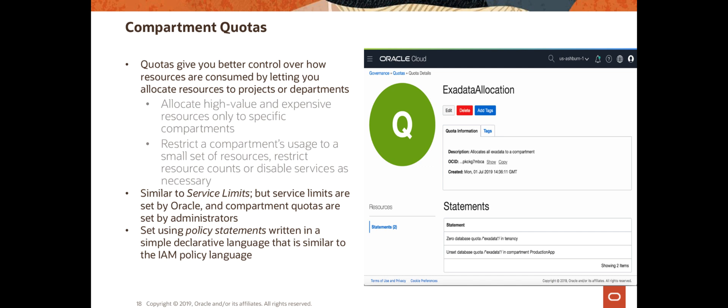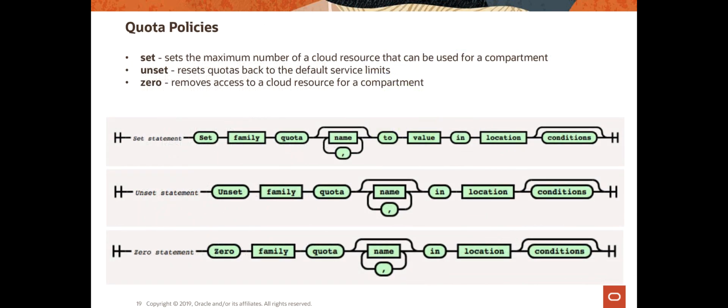In a sense, compartment quotas are similar to service limits that we just looked at. But the biggest difference is that service limits are set by Oracle, and compartment quotas are set by administrators in the tenancy. Compartment quotas are set using policies that allow you to allocate resources with a high level of flexibility. These policy statements are written in a fairly simple declarative language, which is similar to the IAM policy language.